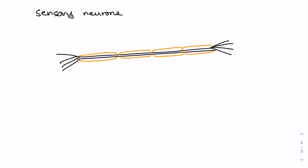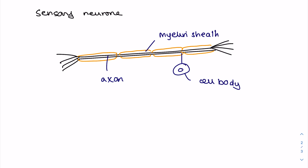Now we're going to look at various types of neuron, starting with the sensory neuron. Things to point out: you have what's known as a cell body, a long axon which is insulated by a fat layer known as a myelin sheath, which speeds up how fast those electrical impulses pass along the neuron. These junctions at this end will be making connections with sensory receptors, whereas the junctions up here will be making connections with neurons in the central nervous system.